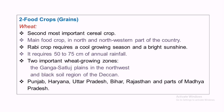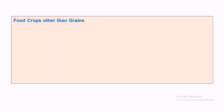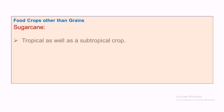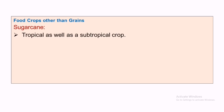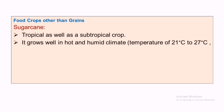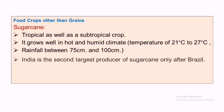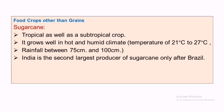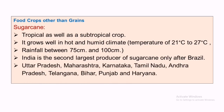Food crops other than grains include sugarcane. It is a tropical as well as subtropical crop that grows well in hot and humid climate, requiring a temperature of 21 to 27 degrees Celsius and rainfall between 75 to 100 centimeters. India is the second largest producer of sugarcane. Uttar Pradesh, Maharashtra, Karnataka, Tamil Nadu, and Andhra Pradesh are the major sugarcane-growing states.